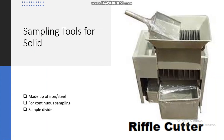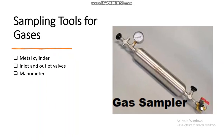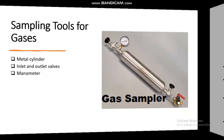The riffle cutter is made up of iron or steel and is used for continuous sampling; it is also called a sample divider. For gases, we can use a metal cylinder with inlet and outlet valves and a manometer connected to it to measure the gas pressure.